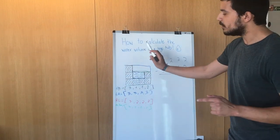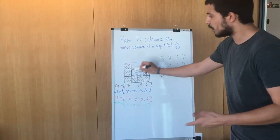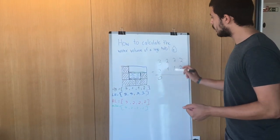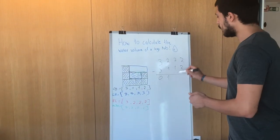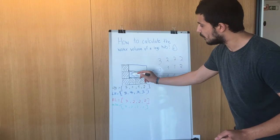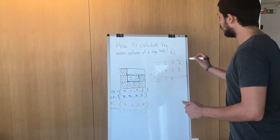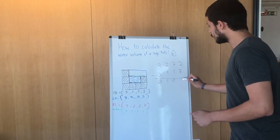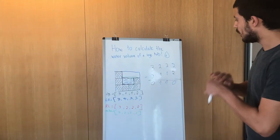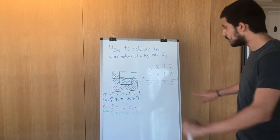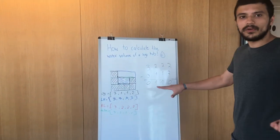3 minus 3 is 0 because here we don't have any water block. Next 2 minus 1, 1. The same for the next one, 1, because as you can see we have 1 and 2 blocks of water. And the next we have no block of water, so 0. So now, very simple, we just sum all the elements in this array and we get our total volume of water.